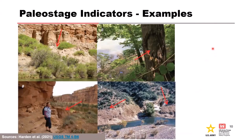Shown here are some examples of paleo stage indicators. The two pictures on the left are examples of slack water deposits that would inform a PSI. The top right is a tree scar that was determined to have occurred because of a flood, which can also help inform a PSI. The bottom right demonstrates erosional features that were used to inform a PSI.